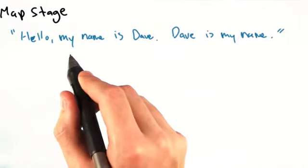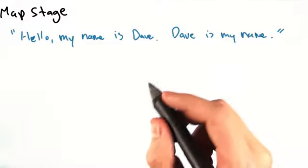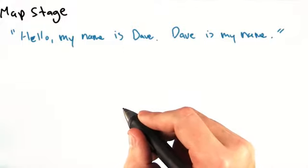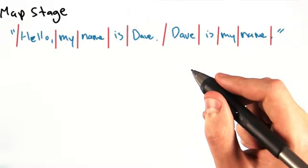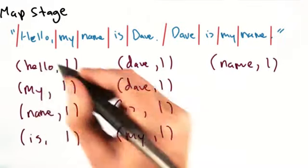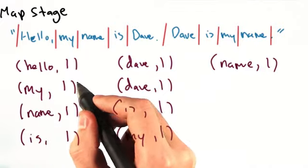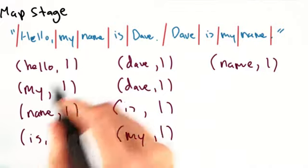Hello, my name is Dave. Dave is my name. The mapper would split the words on the white space like so. The mapper would then emit the following key value pairs. Hello, one, my one, name one, and so on.